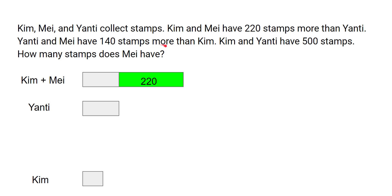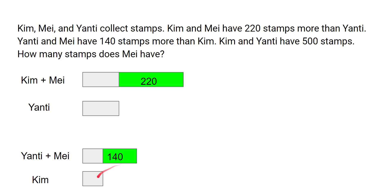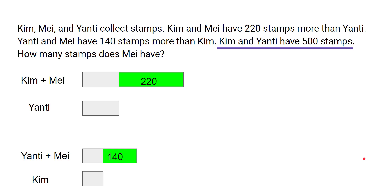For the second statement — Yanthi and May have 140 stamps more than Kim — Kim is the reference, so we draw a model for Kim, and show Yanthi and May having 140 more than Kim. We now also note the key point: Kim and Yanthi together have 500 stamps.